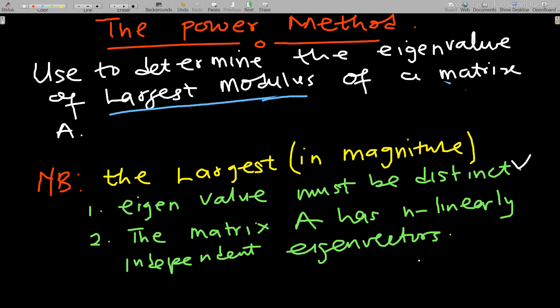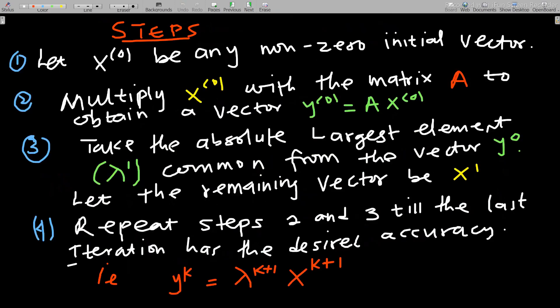Also, the matrix A must have linearly independent eigenvectors. We know that if a matrix has different or distinct eigenvalues, then it will have linearly independent eigenvectors, because every one of the eigenvalues will produce an eigenvector. So that is what this whole method is about — it is limited to only matrices that have distinct eigenvalues.